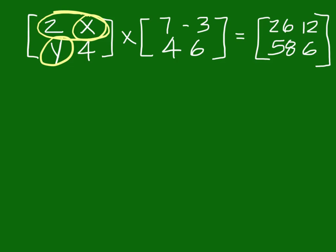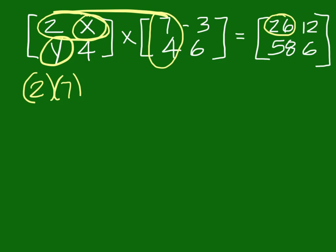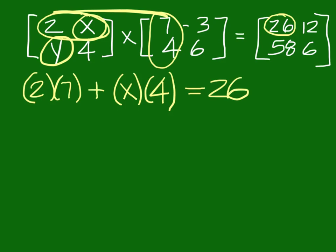So if we're in the first row, we can choose column 1 — and that would pertain to what answer in the answer matrix? Row 1, column 1 in the second one pertains to what number in the last matrix? 26. So if I did 2 times 7 and then plus X times 4, I would come up with an answer of 26.